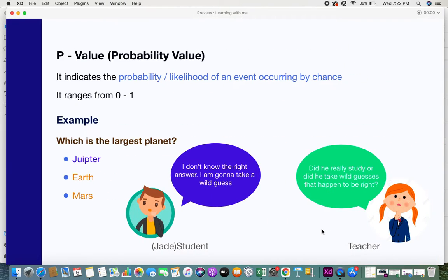P-value is also called a probability value and what this means is it indicates the probability or the likelihood of an event occurring by chance. It's not a very frequent event but it happens by chance and that likelihood is what is called a p-value. Generally the p-value ranges from 0 to 1.